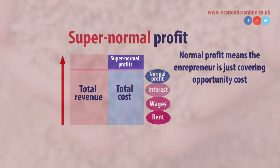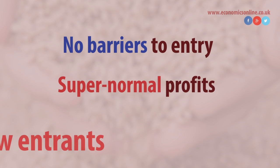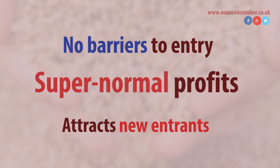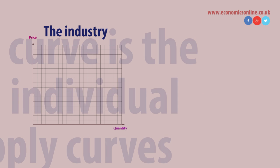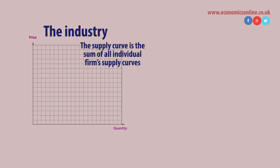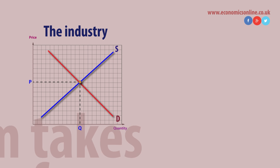The absence of barriers to entry allows firms to enter the market, attracted by the supernormal profits available in the short run. The single firm takes its price from the industry. For the firm, its average revenue curve — also its demand curve — is perfectly elastic.